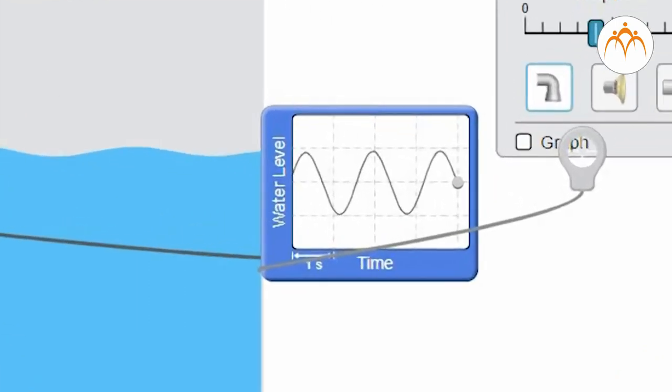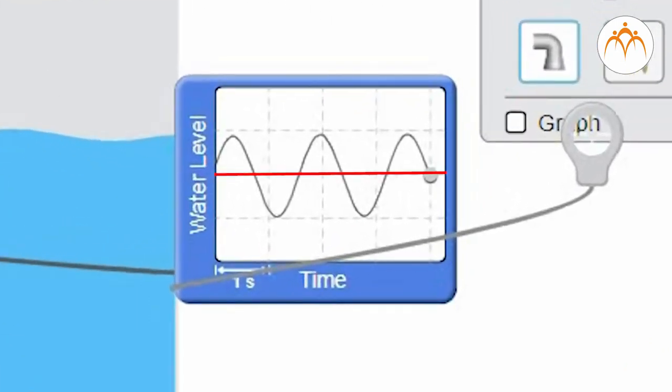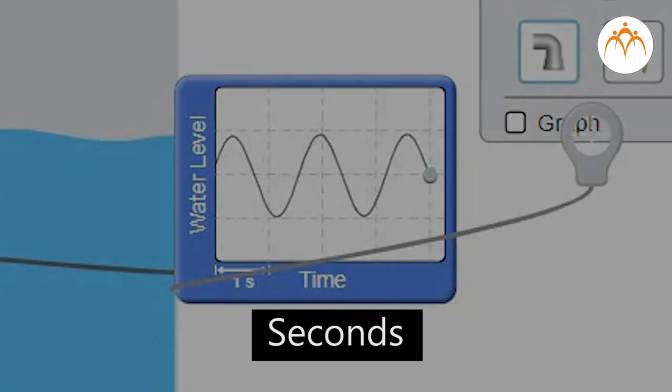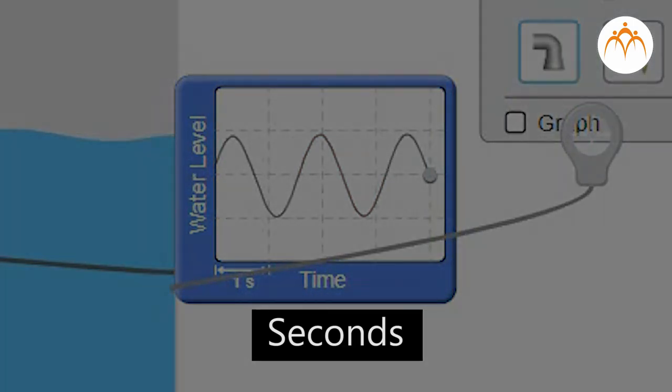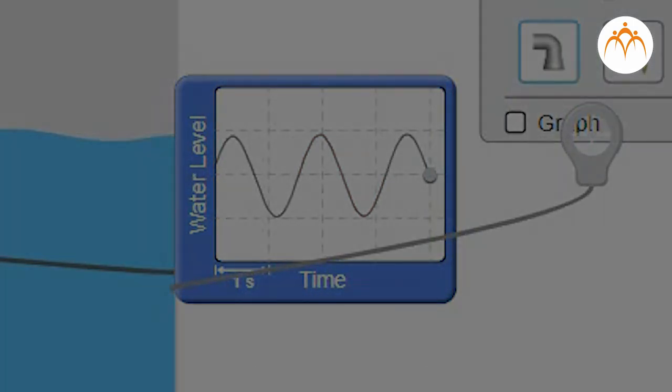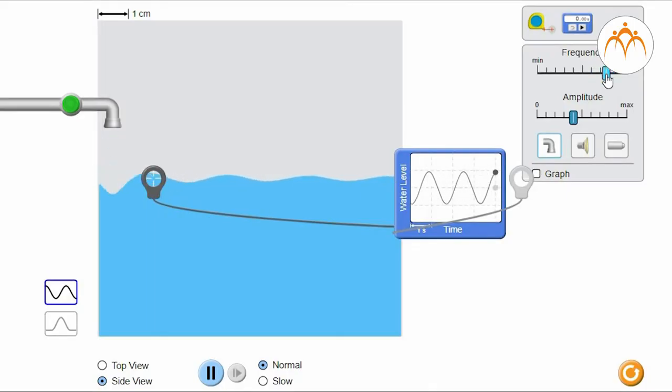We will plot time on this axis. We will plot distance the particle has moved from its original position on this axis. The time it takes for one water molecule to move up, move down and then return to its original position is called the period. It is measured in seconds. It is denoted with symbol capital T. This is the time it takes for one cycle.